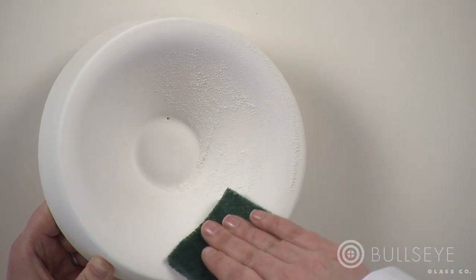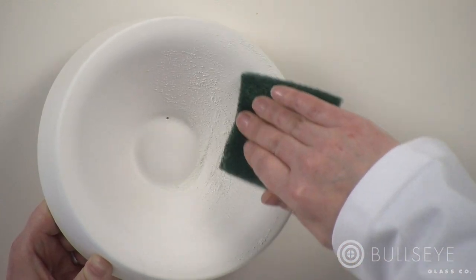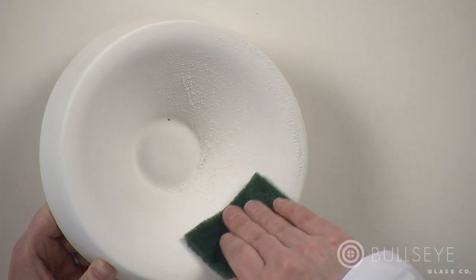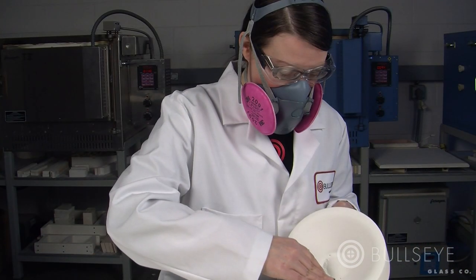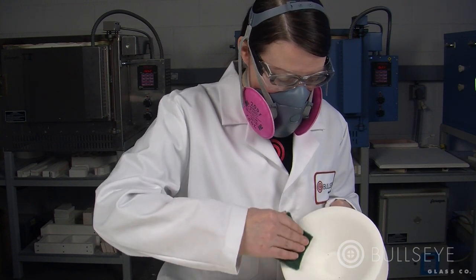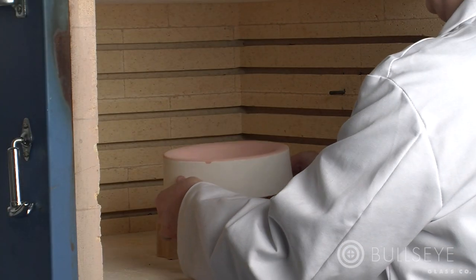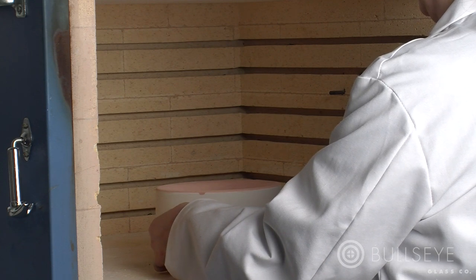When a mold requires a new application of primer, buff the used primer with a soft, dry scrub pad to remove it. Wear protection to avoid inhaling dusts. Prepare and kiln dry the mold as usual.